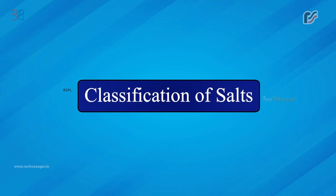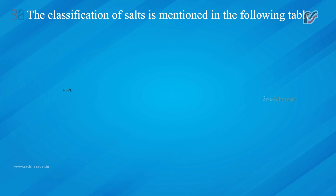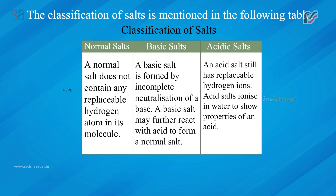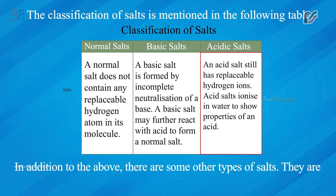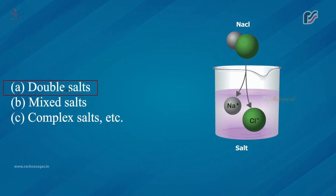Classification of salts: normal salts — do not contain any replaceable hydrogen atom in their molecule; basic salts — formed by incomplete neutralization of a base, and may further react with acid to form a normal salt; acid salts — still have replaceable hydrogen ions and ionize in water to show properties of an acid. In addition, there are other types of salts: double salts, mixed salts, complex salts, etc.